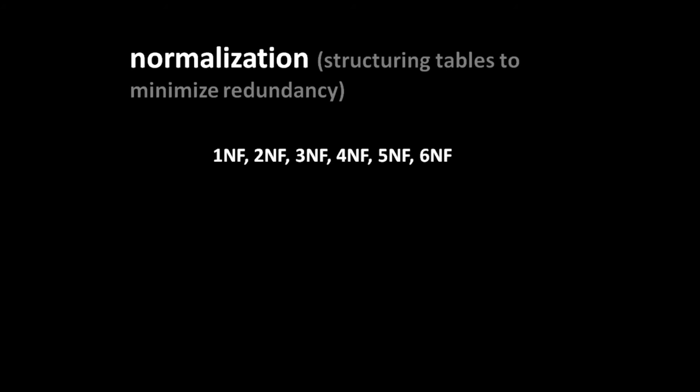Very shortly after Codd introduced the relational model itself, he also introduced the first three of what are called the normal forms: the first, second, and third normal forms. There's also a fourth, fifth, and sixth normal form. The fourth and fifth were introduced by other people later in the 70s, and the sixth normal form was devised in about 2003. These normal forms are progressive - when you normalize to the first normal form, you can then proceed to the second, third, fourth, and so forth. If your database conforms to the third normal form, it implicitly also conforms to the second and first.